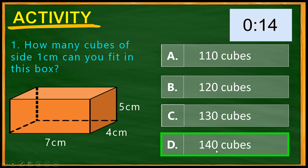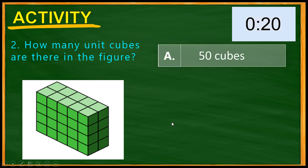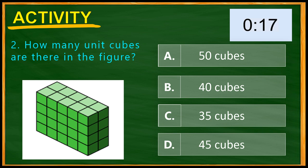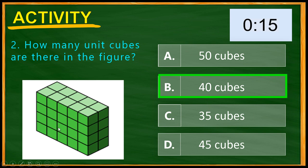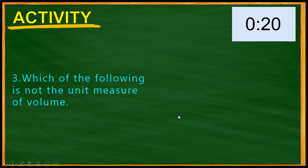Question 2: How many unit cubes are there in the figure? Choices: A) 50 cubes, B) 40 cubes, C) 35 cubes, D) 45 cubes. You have 20 seconds. Time's up! The correct answer is B — 40 cubes. Because 5 × 2 = 10, and 10 × 4 = 40.